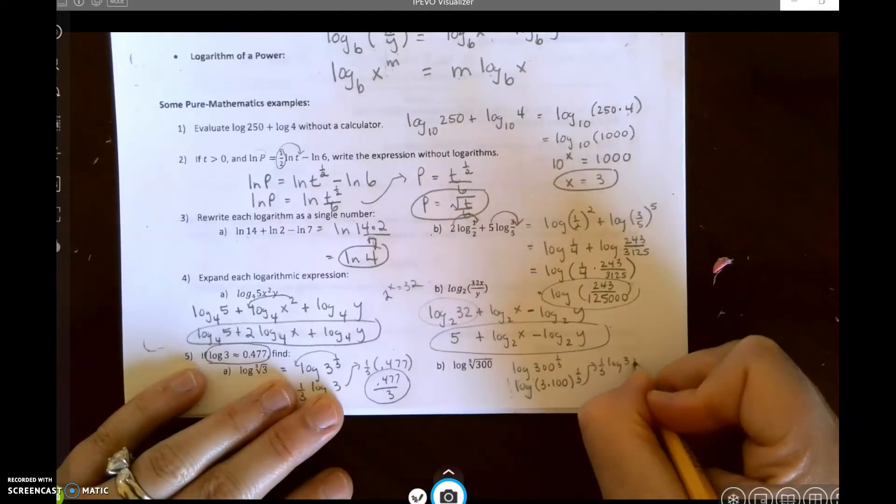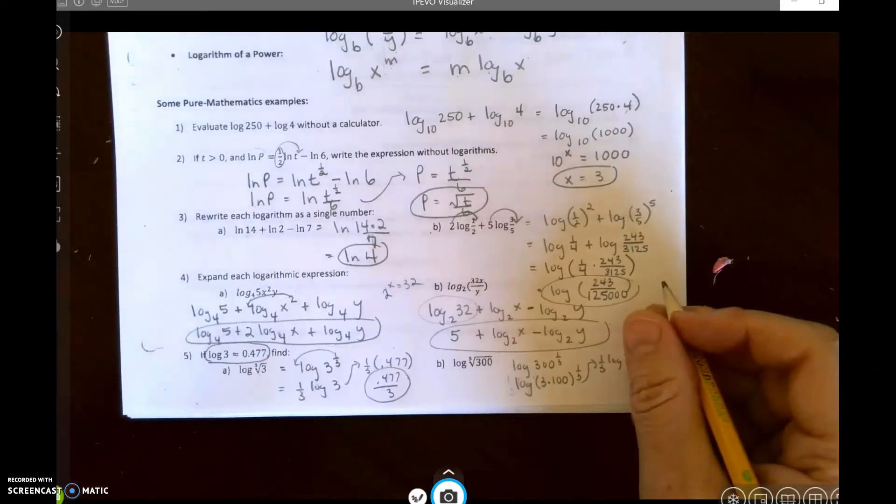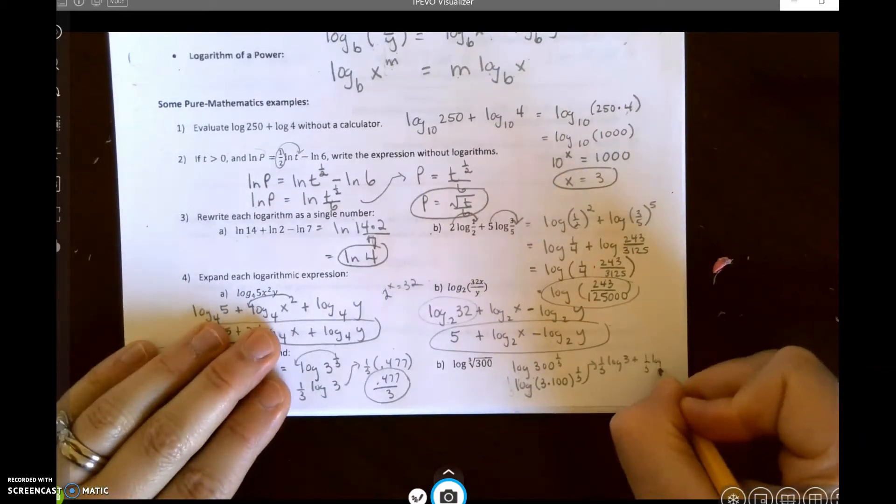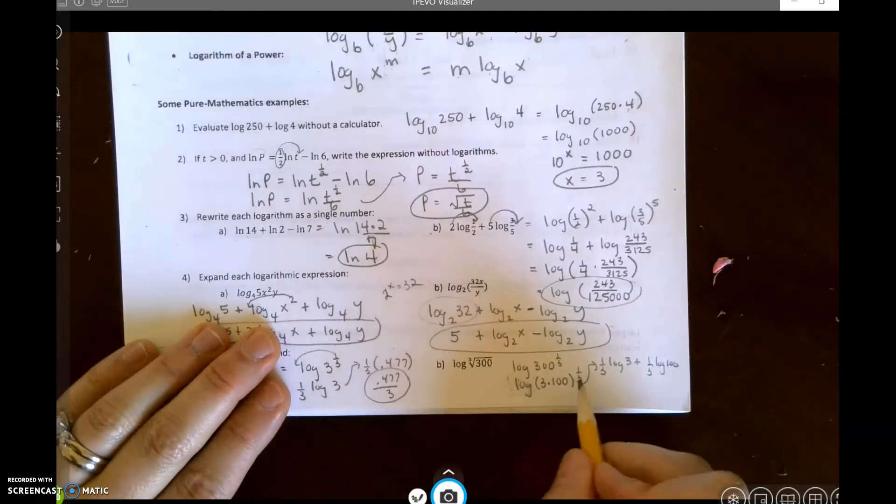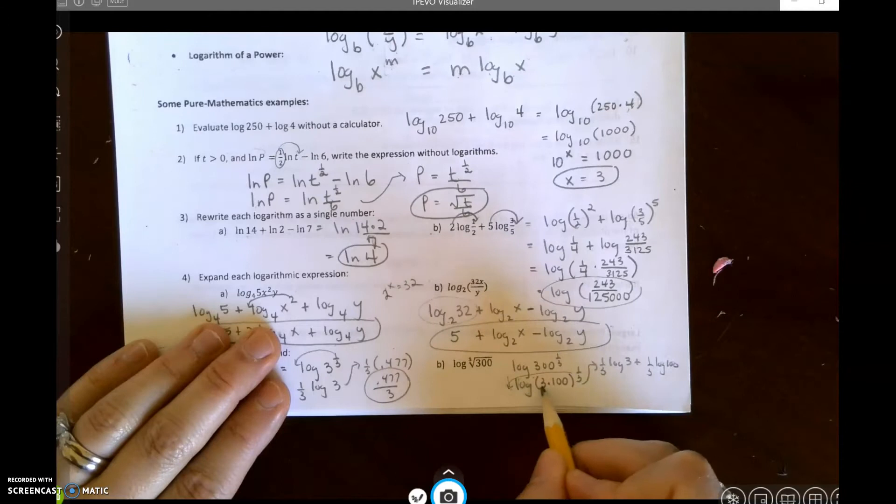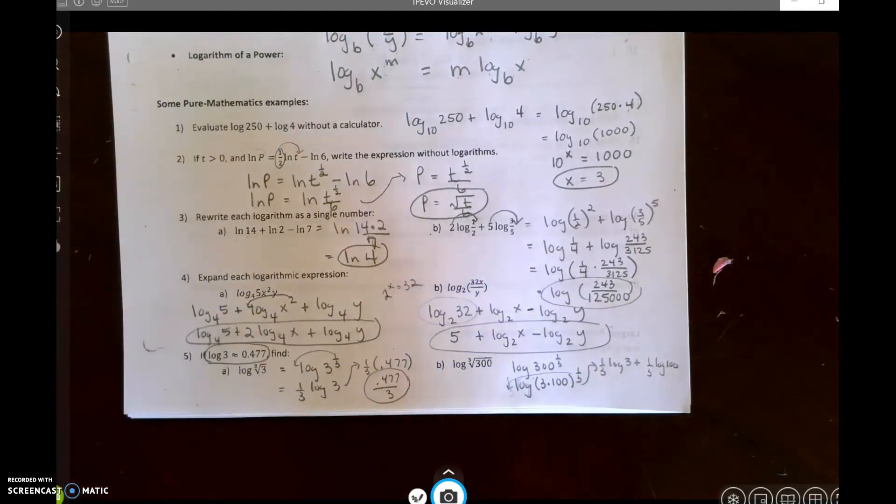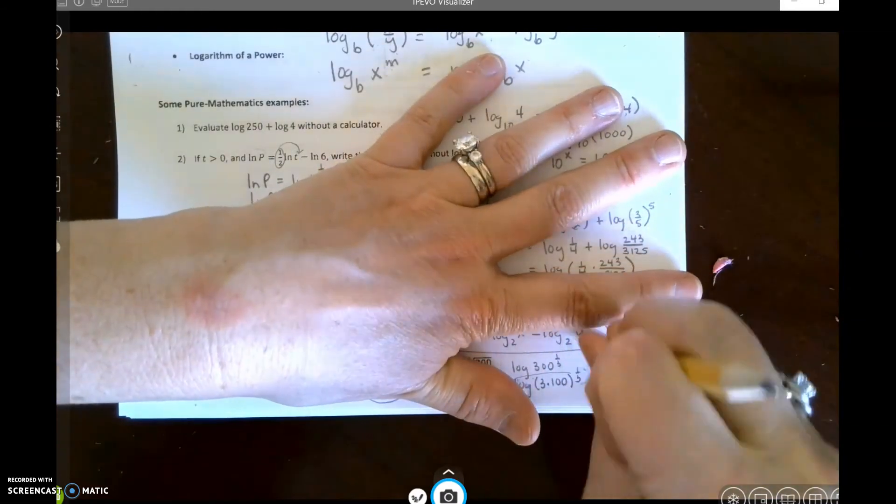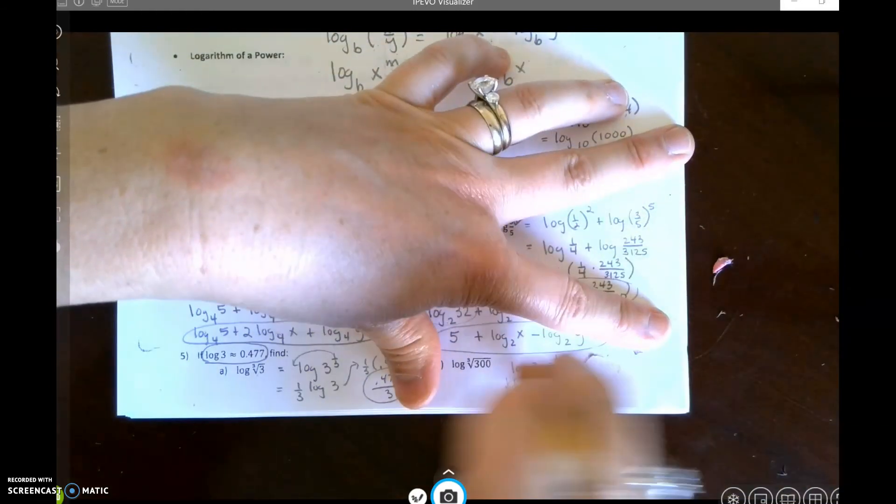And then I'm going to move this to the front, and I get one-third times the log of 3 plus one-third times the log of 100. Because when I move this one-third to the front, remember this applies to both. Maybe I feel like I'm trying to hurry to get this one in. I'm just going to do this one on the next.